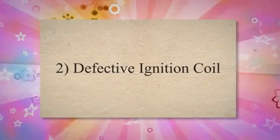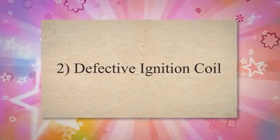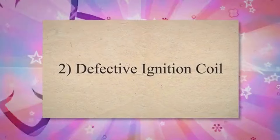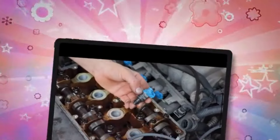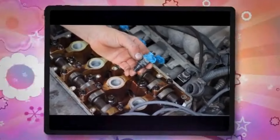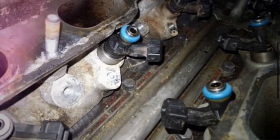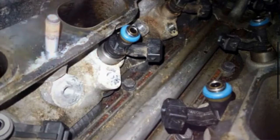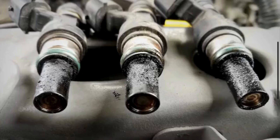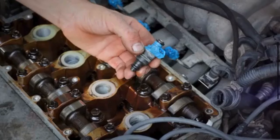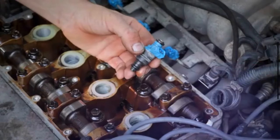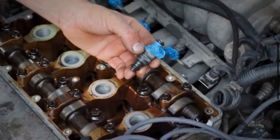2. Defective ignition coil. The ignition coil generates the high-voltage spark that ignites the air-fuel mixture in the combustion chamber. If the ignition coil for cylinder 1 is faulty, it can result in a weak or no spark, causing a misfire.